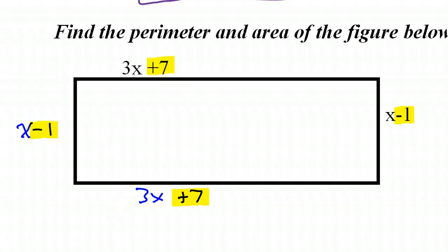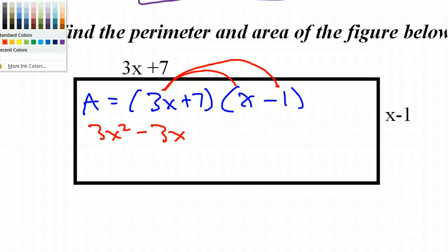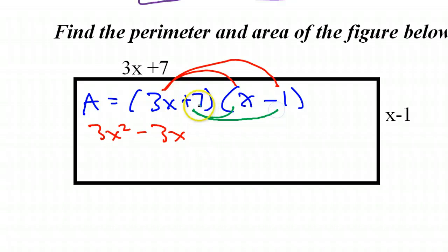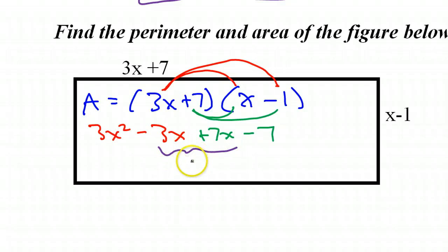Now for the area. For the area of a rectangle, we're just talking about length times width. So for the area, we're just going to multiply 3x plus 7 times x minus 1. So we will simply do our double distributive property. So 3x times x, that's 3x squared. 3x times negative 1, that's negative 3x. All right. Now we'll multiply 7 times everything. 7 times x is 7x. 7 times negative 1 is negative 7. All right. Combine those like terms in the middle. That's going to give us 4x. So that's 3x squared plus 4x minus 7.